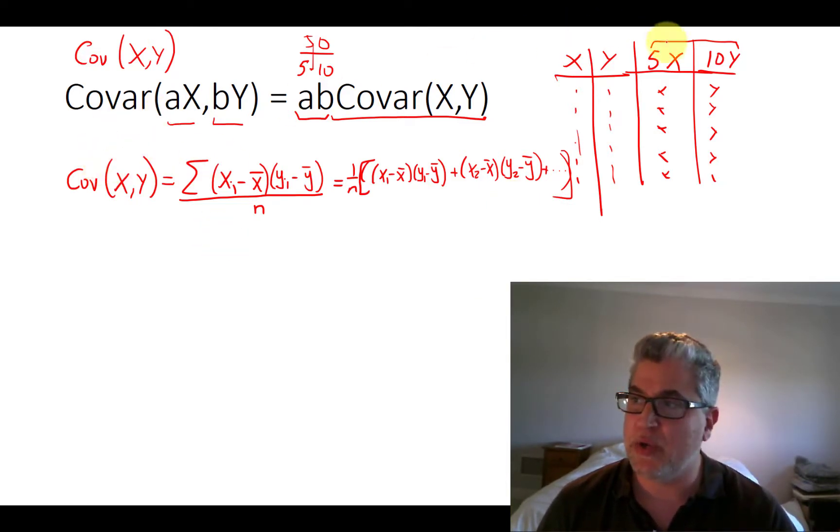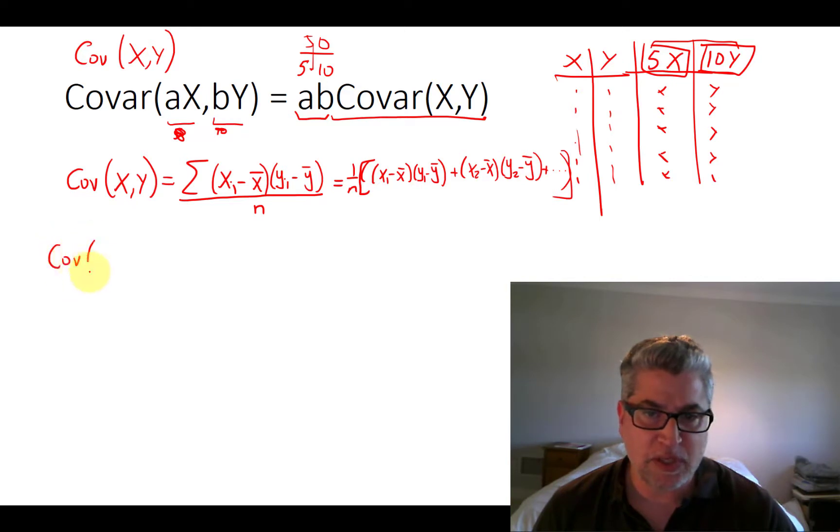So let's apply this formula for covariance, but let's apply it to our newly transformed variables. And let's keep it general, and rather than committing to 5 and 10, let's do A and B. So using this formula, what is the covariance of AX and BY? So all we need to do to figure this out is to plug in AX over here, wherever we saw X, and BY, wherever we saw Y. So let's do that.